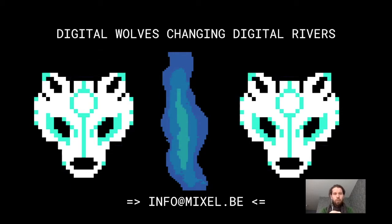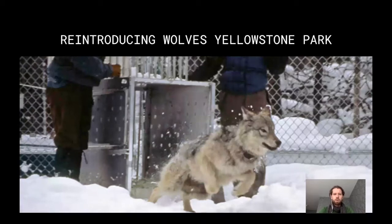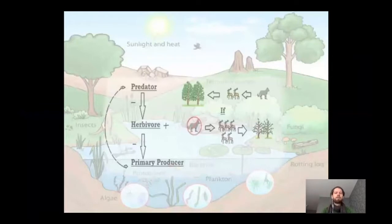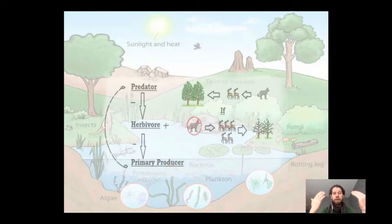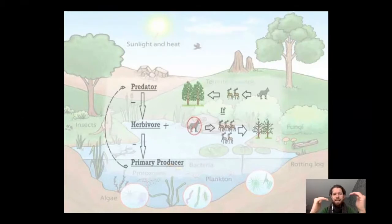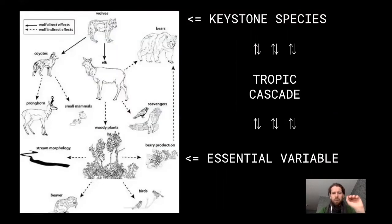The topic was 'digital wolf changing digital rivers,' which is a reference to something that happened in Yellowstone Park where they reintroduced wolves. Fascinatingly, it stabilized the riverbanks. How is it possible that releasing wolves can stabilize rivers? To understand that, we need a bit more detail about ecosystem dynamics. First, you add a new predator, which affects the other predators. Predators affect their herbivores, and herbivores affect the primary resources like plants and the riverbank. This is called a trophic cascade.